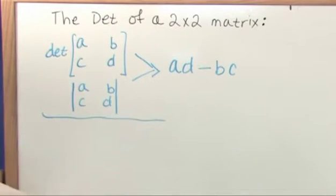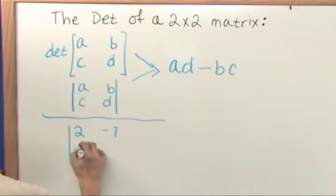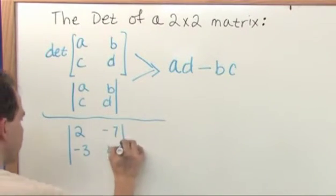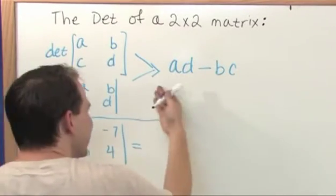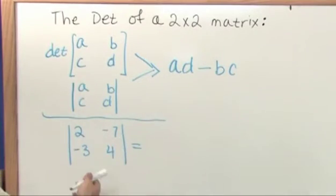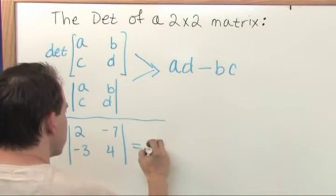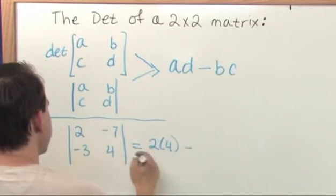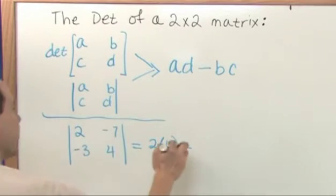That is how you calculate it, so let's go ahead and do a few. If I were going to find the determinant of the matrix, 2, negative 7, negative 3, 4, how would I do it? Well, I'm not going to memorize this. I'm not going to label A, B, C, and D. I'm going to put an X with my fingers, literally. 2 times 4 minus this direction, negative 7 times negative 3.